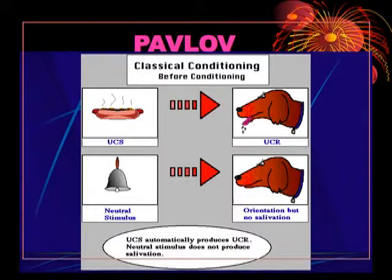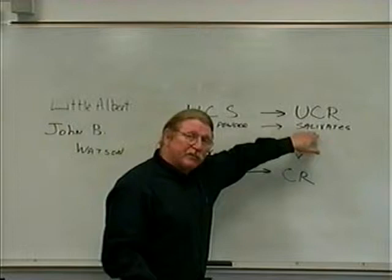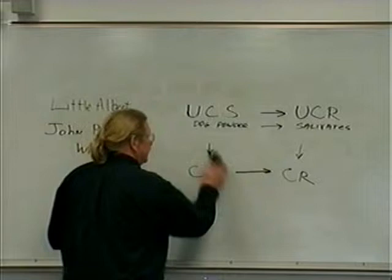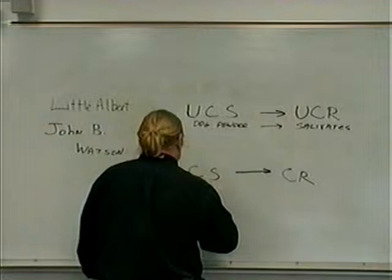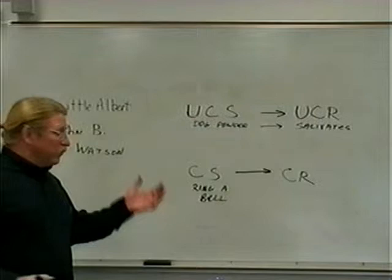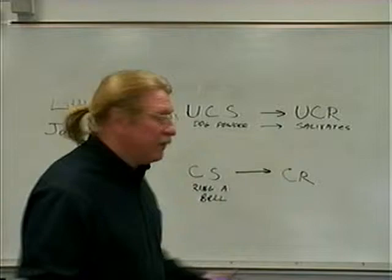Pavlov got into measuring it and all kinds of stuff. In this case, Pavlov would ring a bell, give dog powder, ring a bell, give dog powder. So the conditioned stimulus is the bell. After just a few pairings — four, five, six, seven pairings — what happened after ringing the bell? The dog had a conditioned response, which was salivation. And that's the pattern.